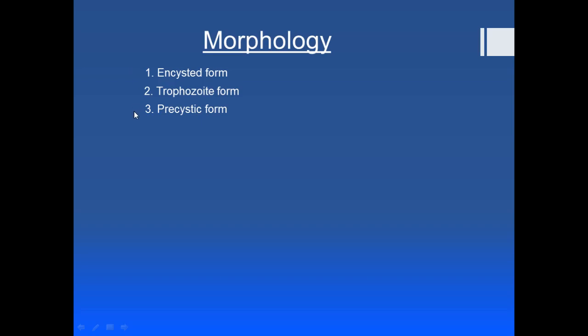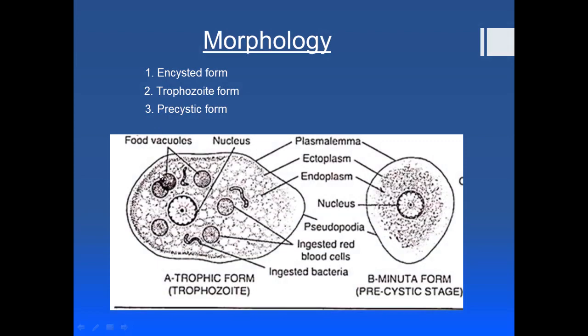These are the morphological forms in which Entamoeba histolytica may be present in its life cycle. These forms are important for diagnostic purposes — when you are examining stool for diagnosis, these forms help in identifying the infection of Entamoeba histolytica.